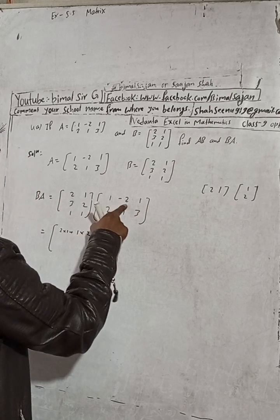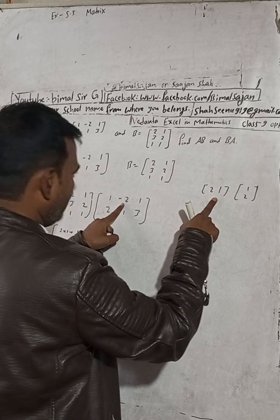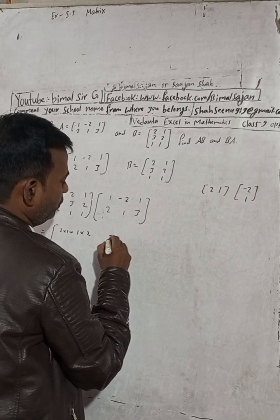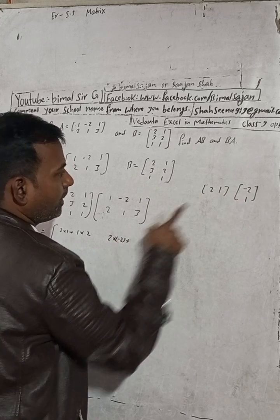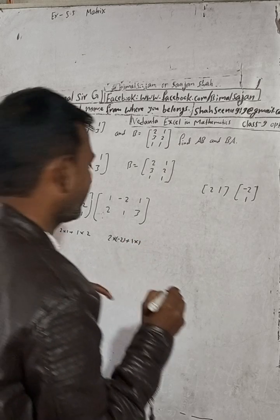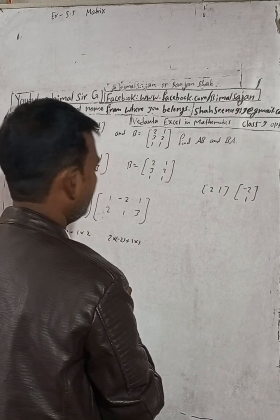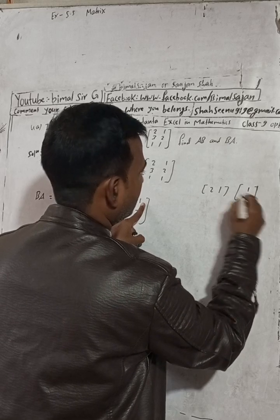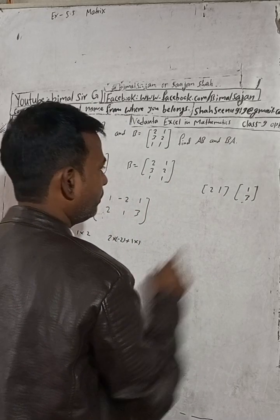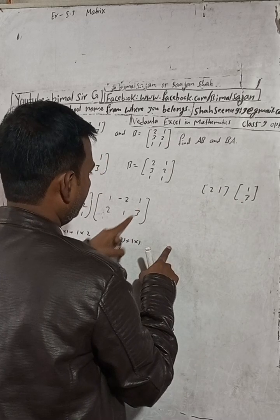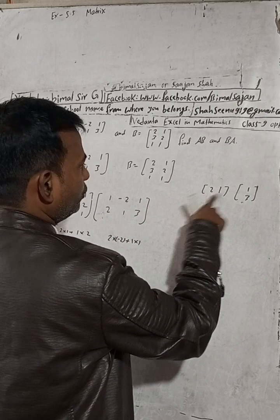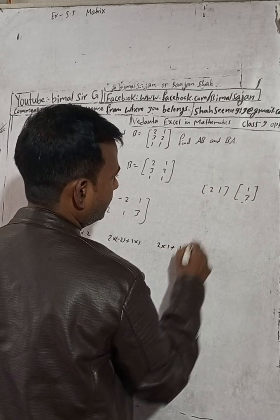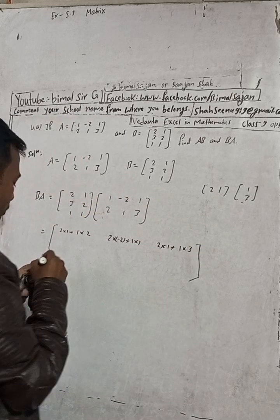For row 1, column 2: take second column of A: -2, 1, giving 2×(-2) + 1×1. For row 1, column 3: take third column of A: 1, 3, giving 2×1 + 1×3.